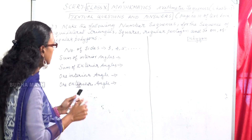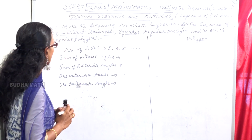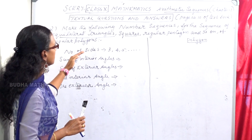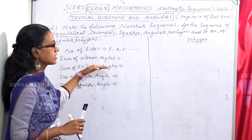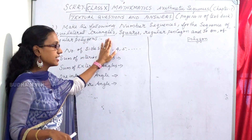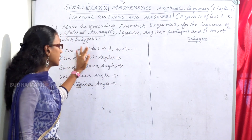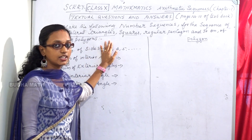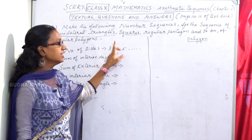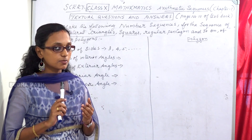Make the following number sequences for regular polygons: equilateral triangle, square, regular pentagon, and so on. We will make the sequence. We can write: number of sides.